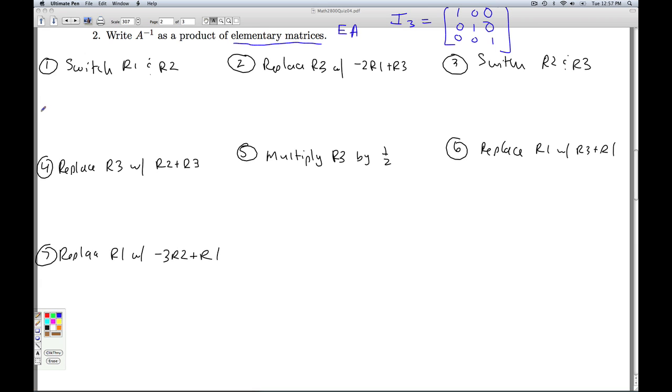So for the first one, E1, we switch row one and row two of the identity matrix. For the second elementary matrix, I'm going to replace the third row with negative two times the first row plus the third row.